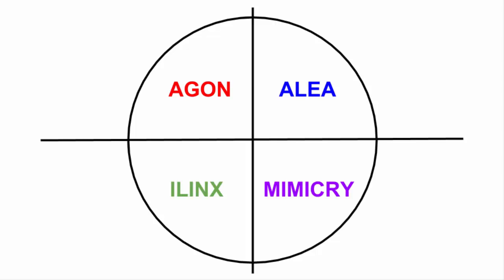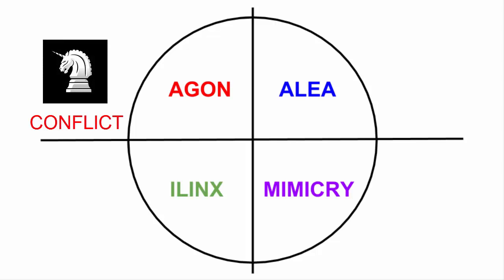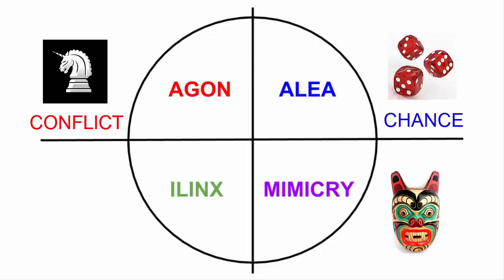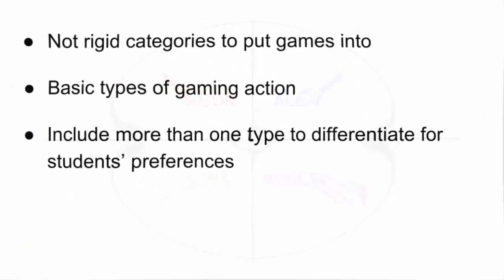In his work on play, Caillois identifies four fundamental game types: Agon, or conflict; Alea, or chance; Mimicry; and Ilinx, or disorientation. As with Bartle's gamer personas, it is best not to think of these categories as rigid and definite game types. We will find it much more useful to think of them as types of action that we can use in our design process.